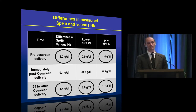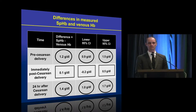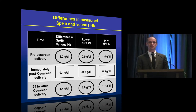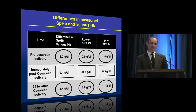Surprisingly, the bias appeared better — actually smaller — when we looked at values immediately after C-section, with less variability. This was quite surprising, because one would have thought that with blood loss, fluid shifts, and changes in dynamic perfusion, the device might have performed worse immediately after C-section than under more physiologically static conditions before or 24 hours afterwards. So it's really hard to infer much about the data from the first generation of the device.